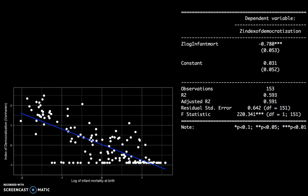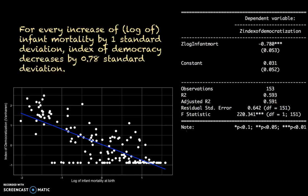That might still look abstract, but minus 0.78 is interpretable because we know how both variables are measured — in standard deviations from the mean. We can formulate it as a sentence: for every increase of the log of infant mortality by one standard deviation, the index of democratization decreases by 0.78 standard deviations. We have changed the unit of measurement into standard deviations from the mean, making it easier to understand what the number means.